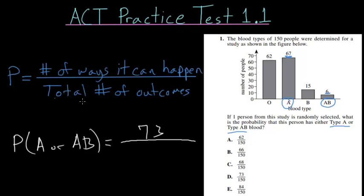Now the denominator, the total number of outcomes, in this particular case is just how many people in total were in this study, so we know that that is 150 people. So the probability that someone randomly selected would have either type A or type AB blood is 73 divided by 150, a little bit less than 50%, and you can see here that choice D is the correct answer.